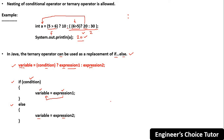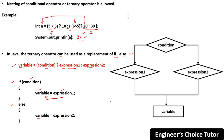Here is a flowchart to illustrate: you have a condition — if it is true, evaluate expression 1 and assign the value to the variable; if it is false, evaluate expression 2 and assign the value to the variable. This flowchart summarizes how the conditional operator works. This is all about the conditional operator in Java.